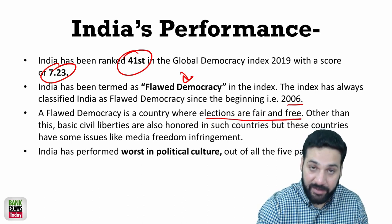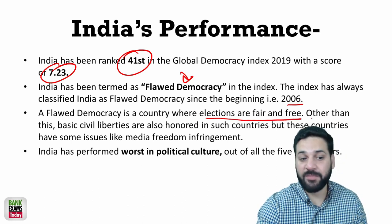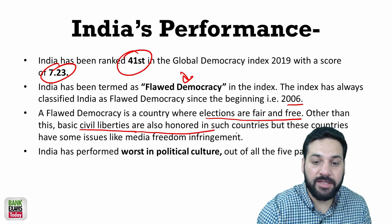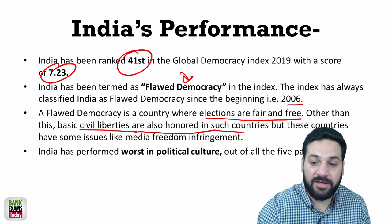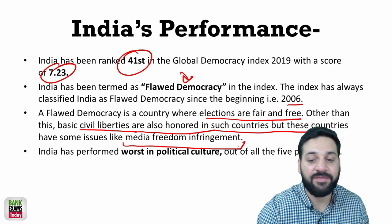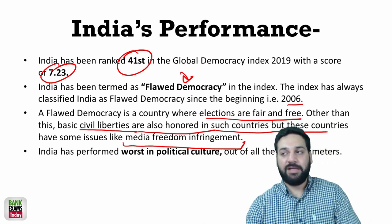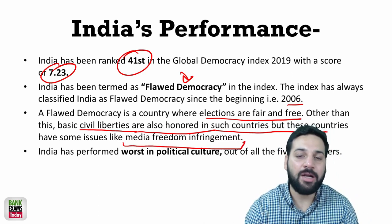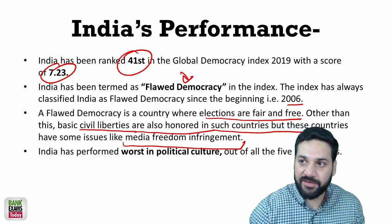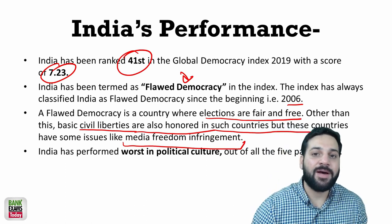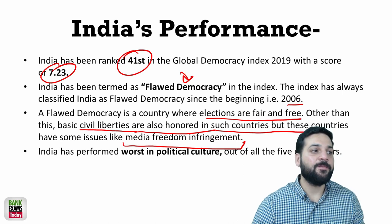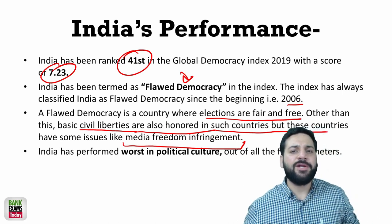A flawed democracy is a country where elections are fair and free, and basic civil liberties are honored. However, these countries have some issues — for example, media freedom. In India, the media is not really free; it is owned by big businesses who are influenced by political parties.